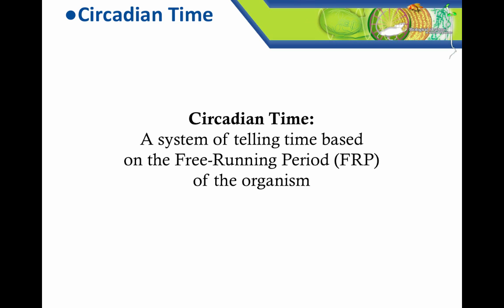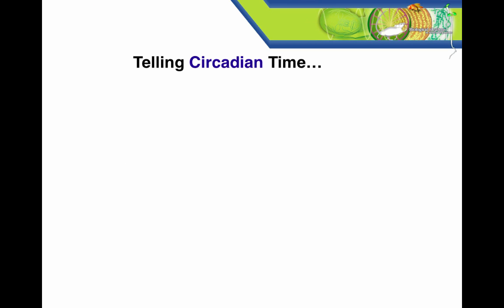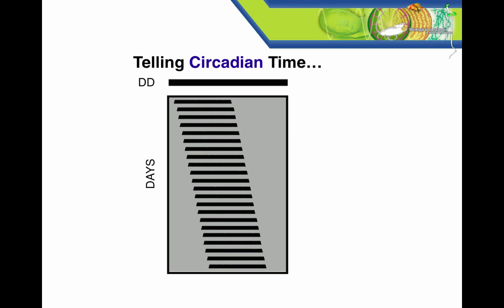Circadian time is a system of telling time based on the free-running period, or FRP, of the organism. Circadian time is used in the absence of time cues, in constant conditions, such as DD or LL. This figure shows simulated activity in a nocturnal rodent, so it's a little more regular than a typical actogram. Note that this is single plotted for clarity, so we're only showing 24 hours on the x-axis. The organism can only use its internal subjective day and night to tell time, which as we discussed in video 1, is imprecise. Thus it free-runs under constant conditions.